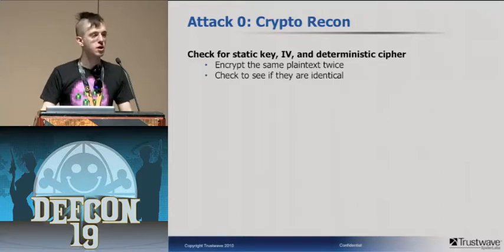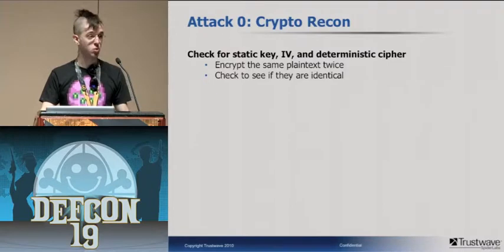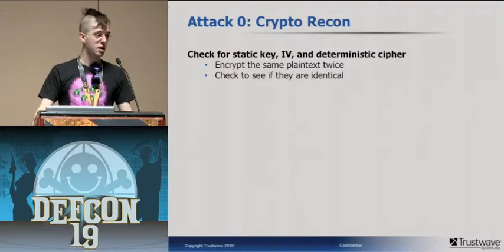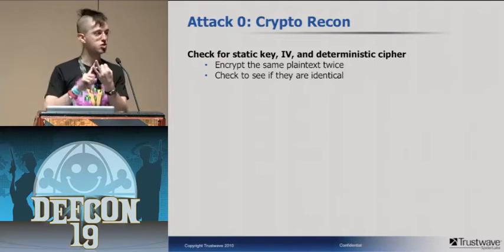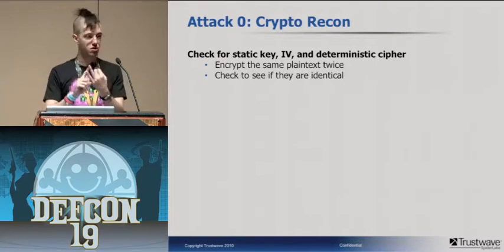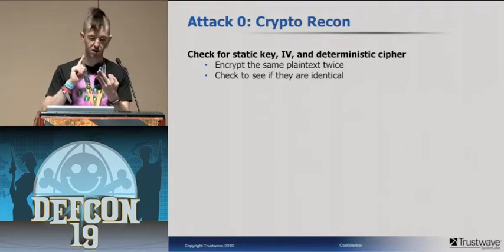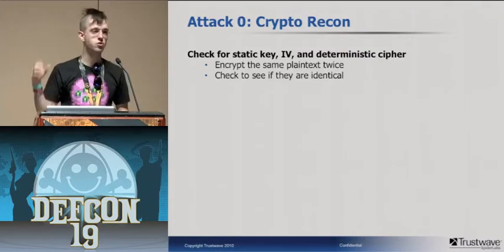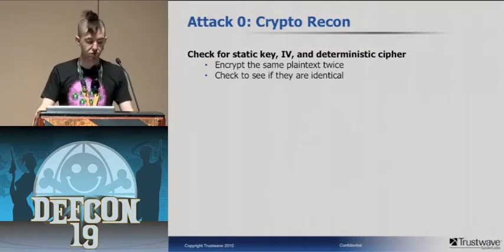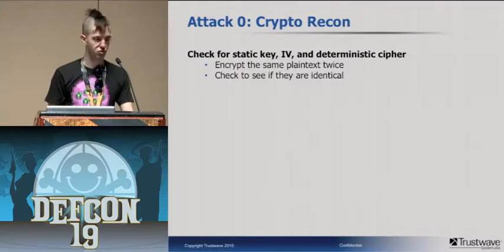If you have an encryption oracle and you encrypt the same plaintext twice, and it comes out to the same ciphertext, you know you have the same key, same initialization vector, and a deterministic cipher being used to encrypt the data. If the ciphertexts are identical, you know all of these things are true.